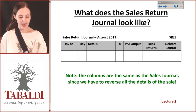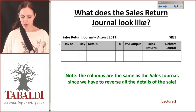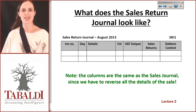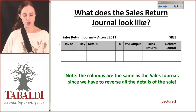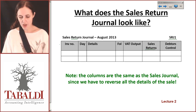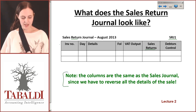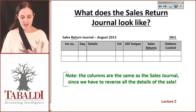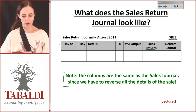What does the sales return journal look like? The nice thing for you as far as your studying is concerned is that the sales return journal looks exactly the same as the sales journal itself. Notice the name of the journal, and you'll notice instead of the sales column, we talk about sales returns and your SRJ rather than your SJ. The columns are the same as the sales journal since we have to reverse all the details of the sales — what we're trying to do is reverse the impact of that sale and reduce everything.